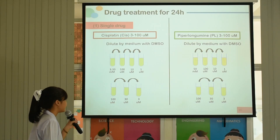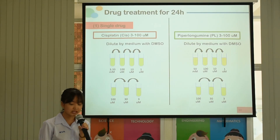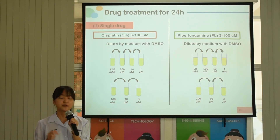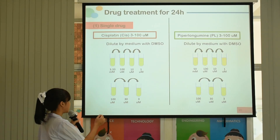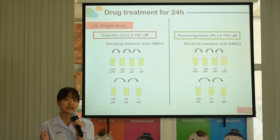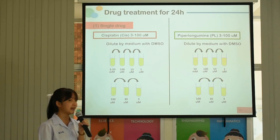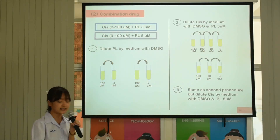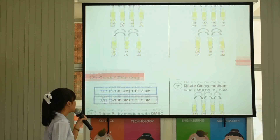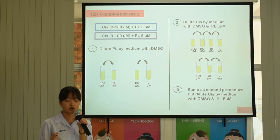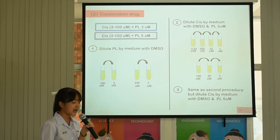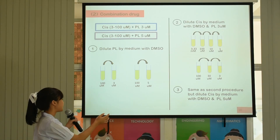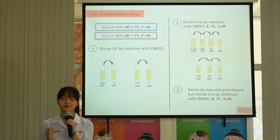Here are the steps of drug preparation. In this study, I started by investigating the cytotoxicity of Cisplatin or Piperlongumine alone. Various concentrations of Cisplatin and Piperlongumine ranging from 3 to 100 µM were tested. As shown in this slide. Next, to determine the anti-cancer effects of Cisplatin and Piperlongumine combination in CCA cell lines, I used PL at 3 or 5 µM with various concentrations of Cisplatin.